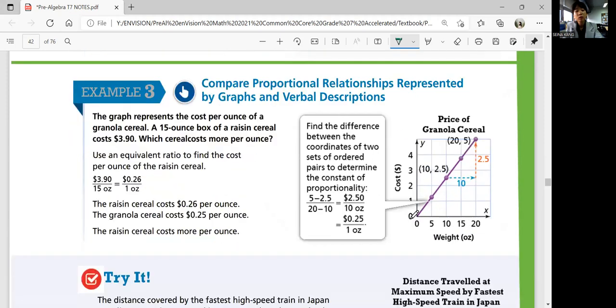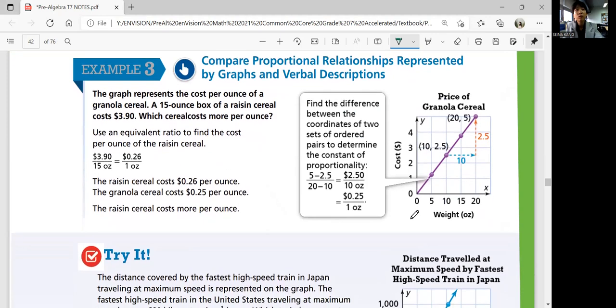Example 3. Compare proportional relationships represented by graphs and verbal descriptions. The graph represents the cost per ounce of a granola cereal. A 15 ounce box of a raisin cereal costs $3.9. Which cereal costs more per ounce? You can use equivalent ratio to find the cost per ounce of the raisin cereal. So you see that 15 ounce box is $3.9. So you can find the unit rate. How much dollars would that be in per ounce? And that's going to be $0.26. So 26 cents per ounce.